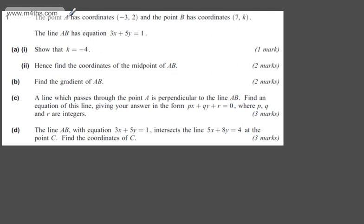In question 1, we're told the point A has coordinates (-3, 2) and the point B has coordinates (7, k). The line AB has equation 3x + 5y = 1.